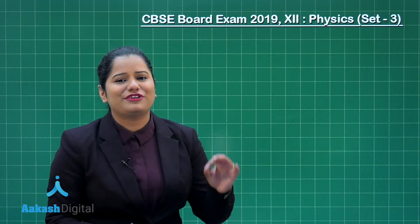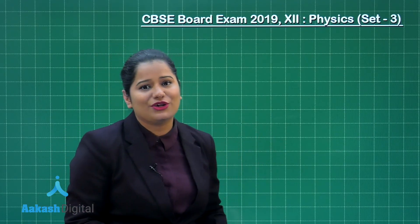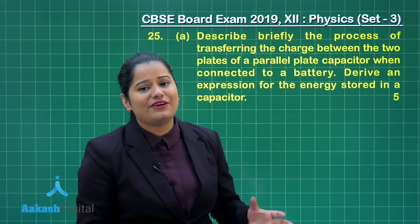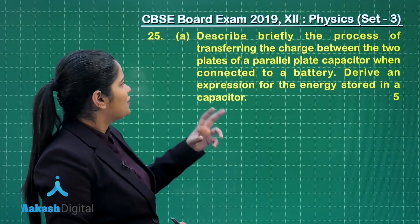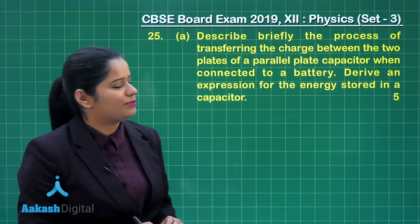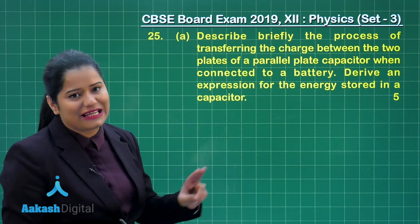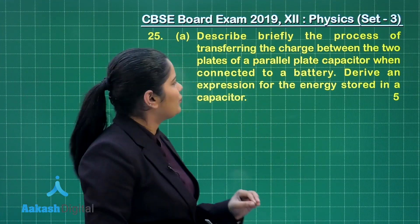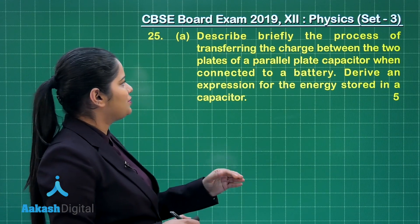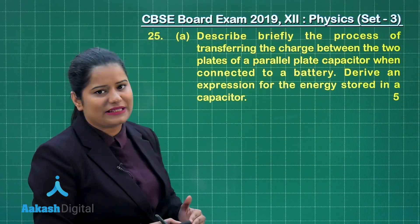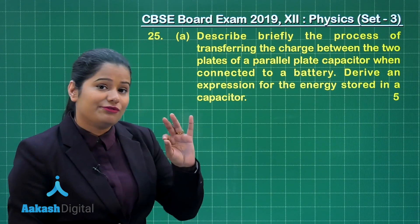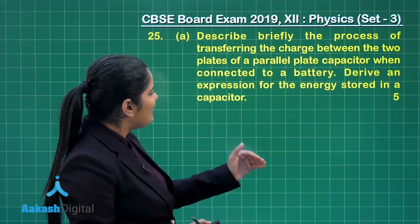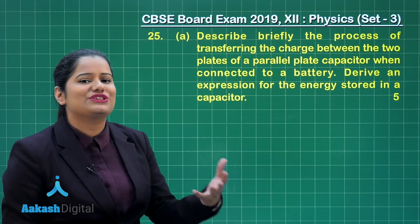It's time to take up the first 5 mark question of Set 3, which was question number 25. In this question, we had a choice. This is the first choice of question number 25, and the part A of that choice. This wants us to describe briefly the process of transferring the charge between the two plates of a parallel plate capacitor when connected to a battery. Further, this part wants us to derive an expression for the energy stored in the capacitor.